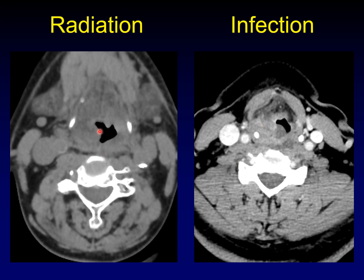So what we have is post-radiation effect causing asymmetric thickening of the supraglottic soft tissues in patient number one, and we have a supraglottic infection — presumably superinfection of a saccular cyst — causing asymmetric thickening and inflammation in the supraglottic soft tissues in patient number two.